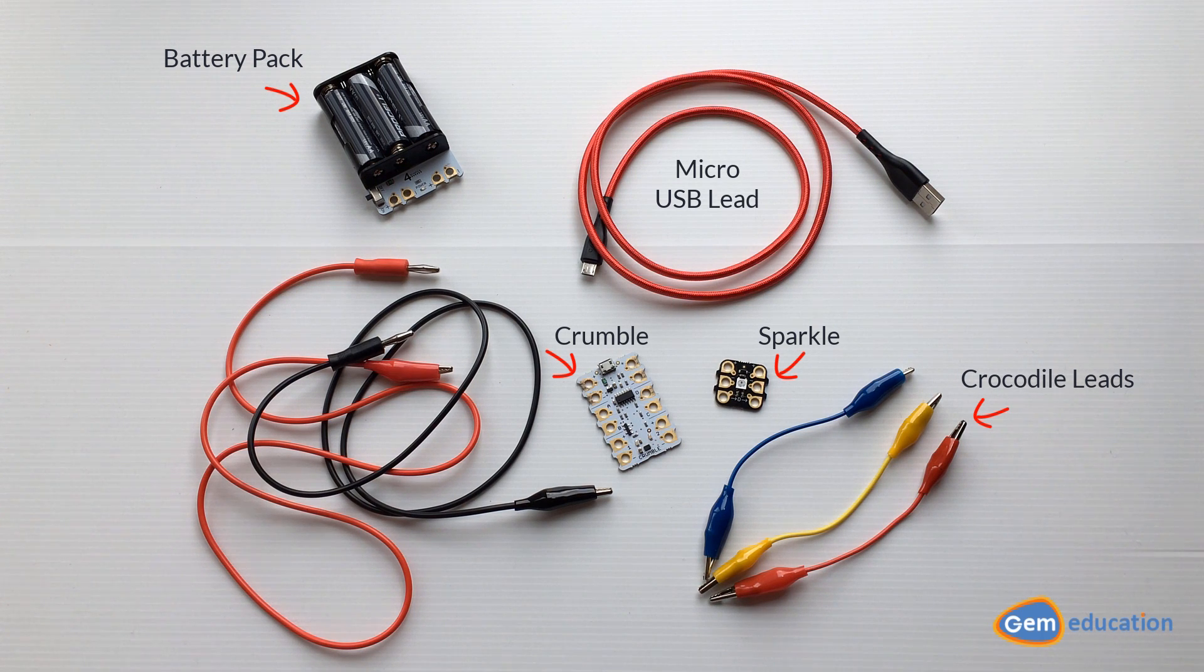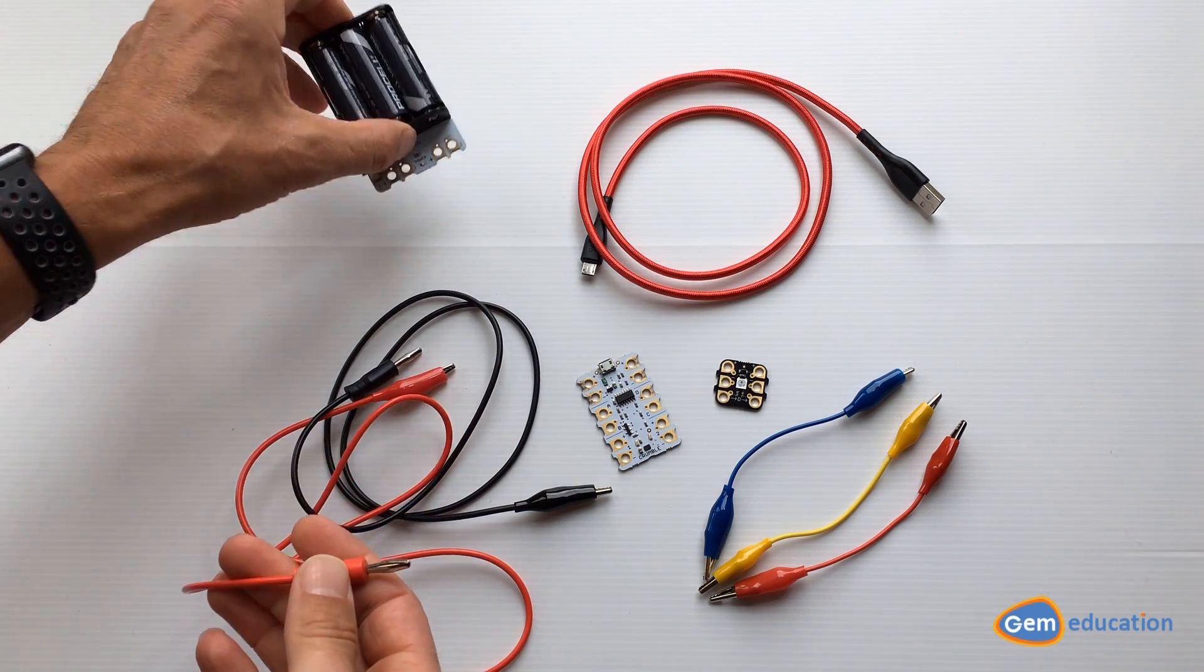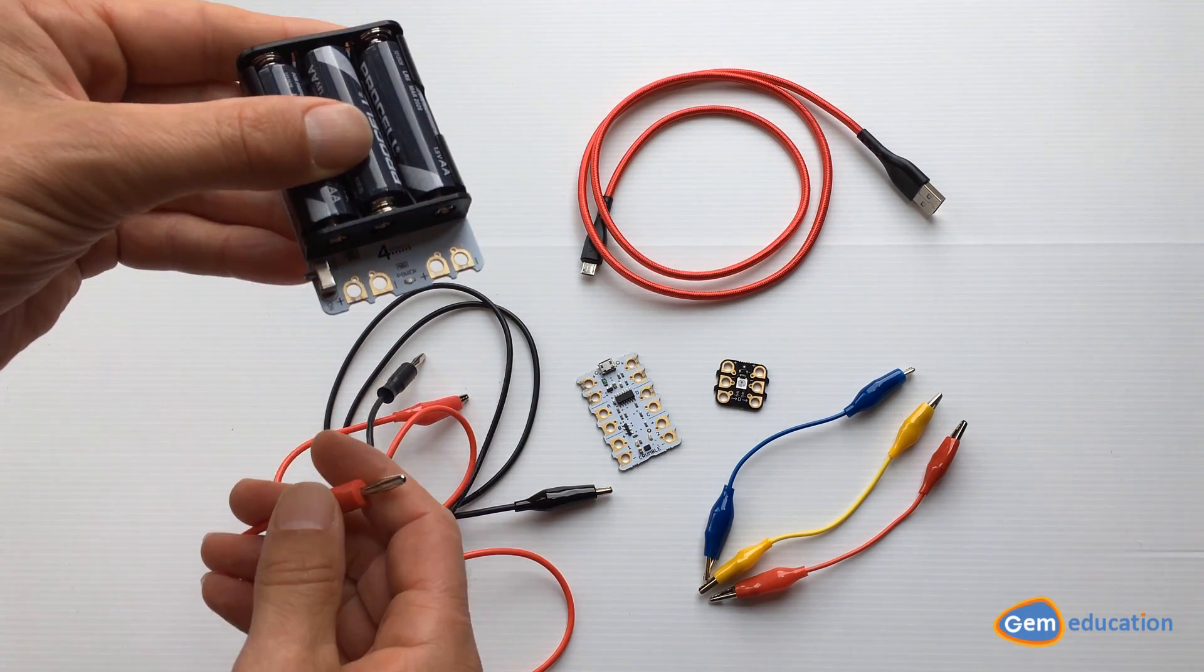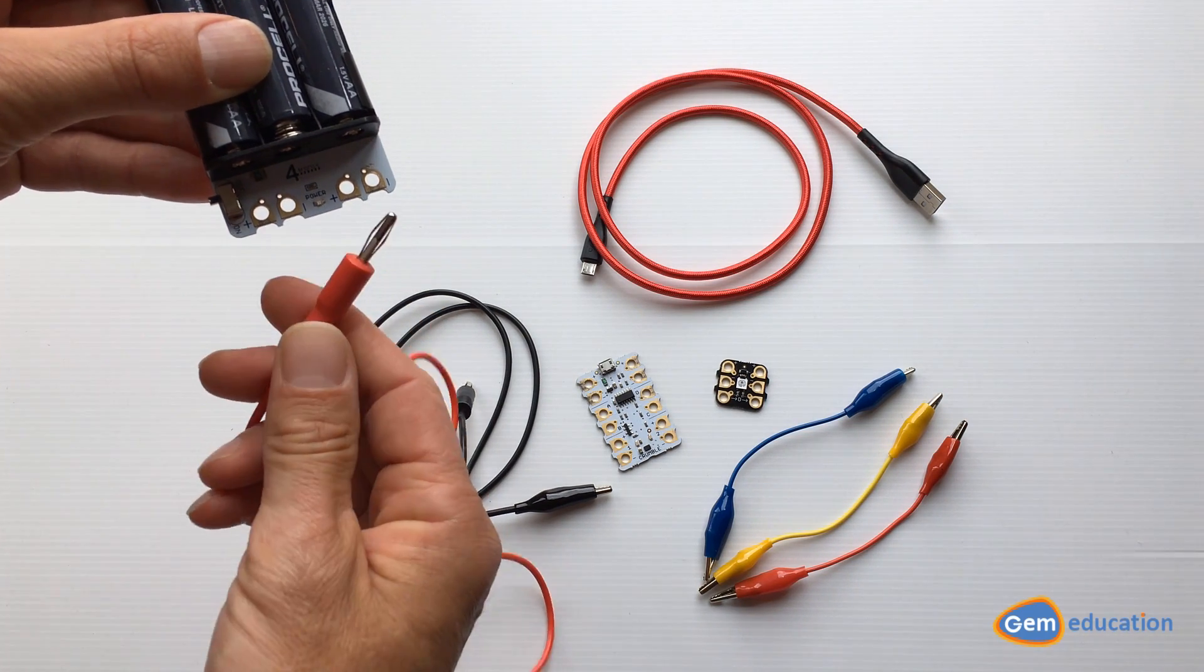First, I'll show you how to connect the crumble to the battery pack. Taking one of your leads, if we look at our battery pack here, we've got pluses and minuses in two sets. I'm going to connect one end of my lead into the minus on the battery pack.